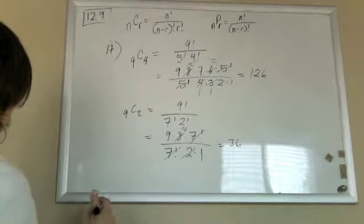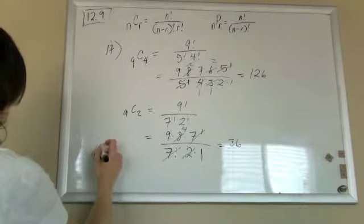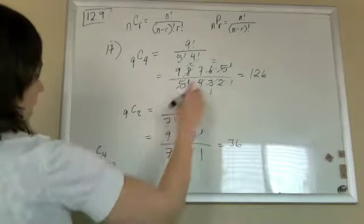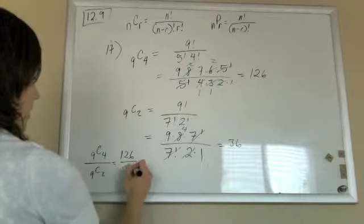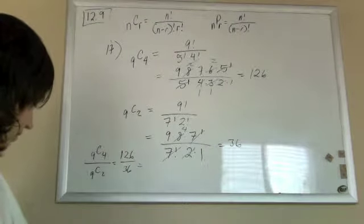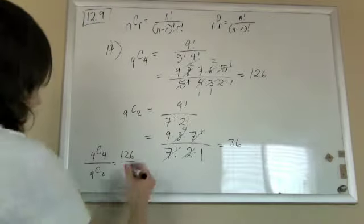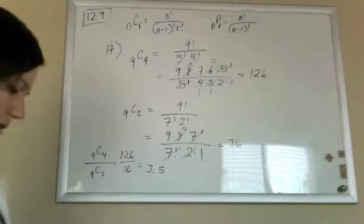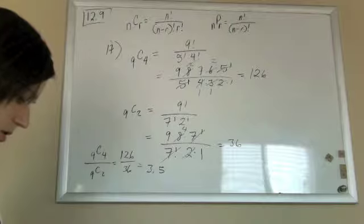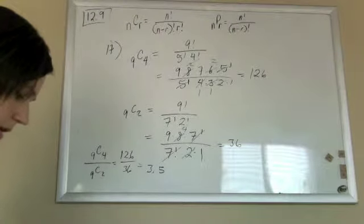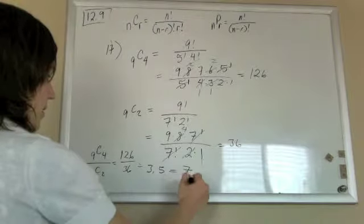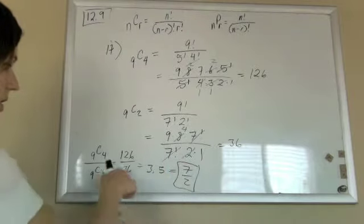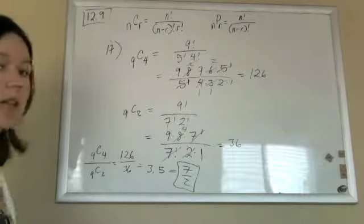So to get our final answer, they want to know what 9C4 divided by 9C2 is. For 9C4 we got 126, for 9C2 we got 36. If we divide that, 126 divided by 36, we get 3.5. And they leave the answer in the back of the book, 3.5 is the same as 7 halves. So if you just simplified that fraction, you get 7 halves. So that's that.